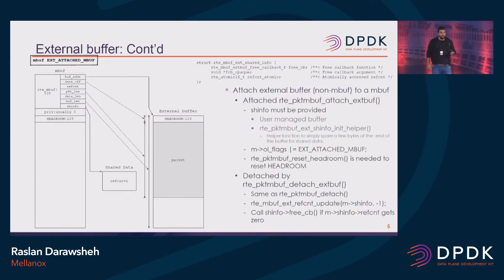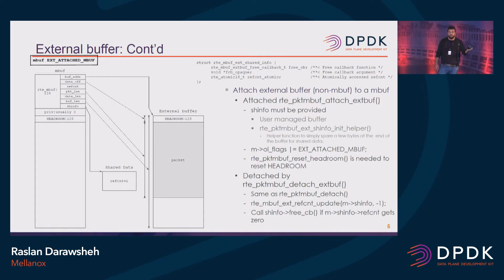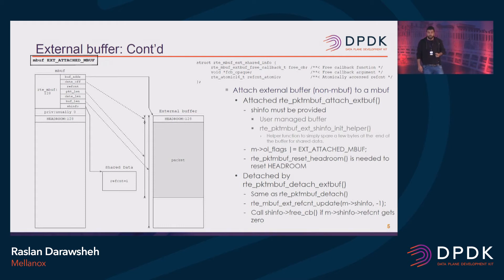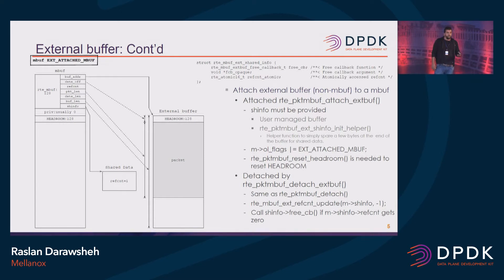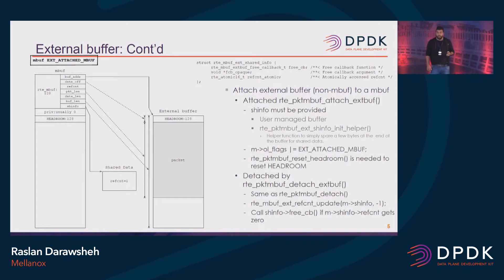So how does external buffer really work? You can think of it like the following: you have a huge external buffer which is going to be used for data. You need to have something called external shared info, which should be provided by the user. Inside it, it has a pointer to a callback function called free callback. It should free the whole external buffer once the reference count reaches zero. There is a main point inside the Mbuf — you have to add the OL flag of external attached Mbuf.